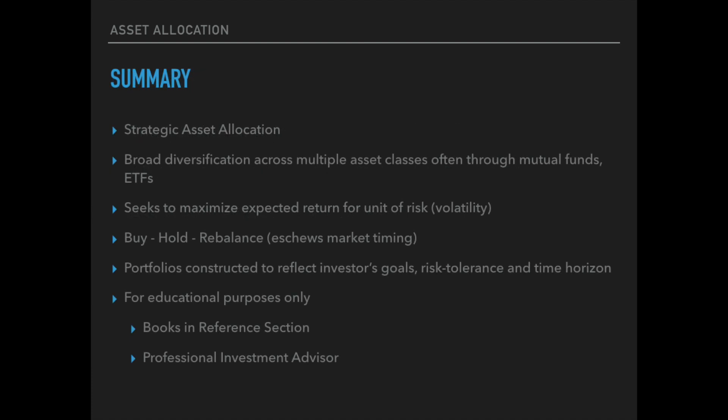In summary, today's presentation has been an overview of strategic asset allocation. When you think of strategic asset allocation, think of a broadly diversified portfolio where monies are invested across multiple asset classes, often achieved through owning mutual funds or exchange-traded funds. This investment approach seeks to maximize expected return for a unit of risk — also referred to as portfolio volatility. It's a buy, hold, and rebalance approach that eschews market timing. Portfolios are constructed to reflect investors' goals, risk tolerance, and time horizon.